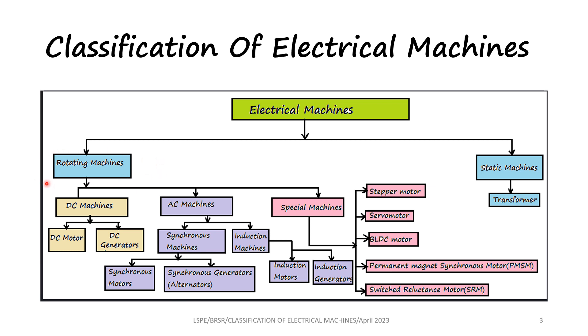Rotating machines are classified into three major categories: DC machines, AC machines, and special machines. DC machines are direct current machines. AC machines are alternating current machines. Special machines work based on the supply given to it.